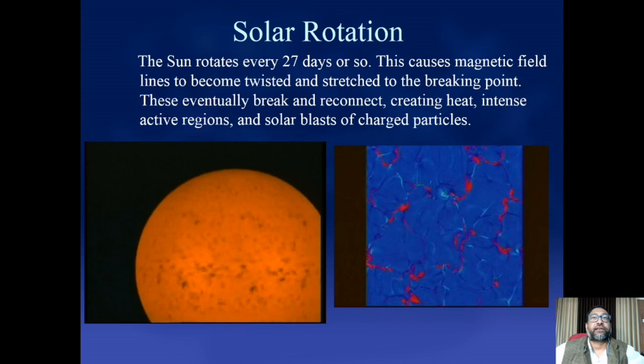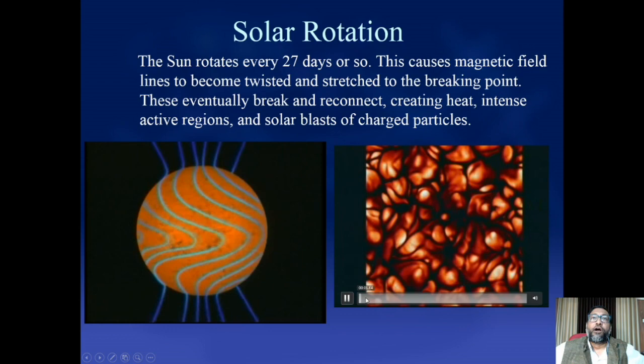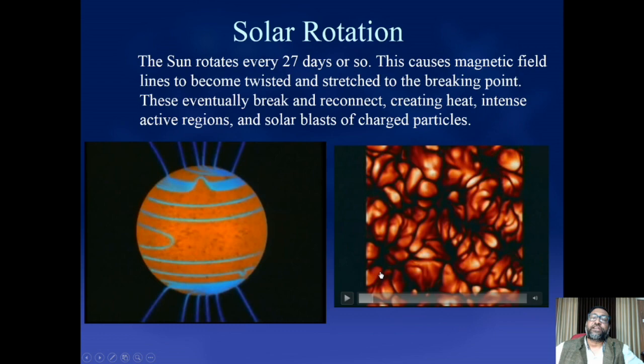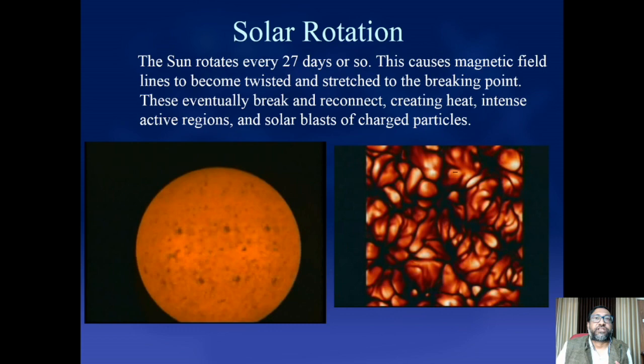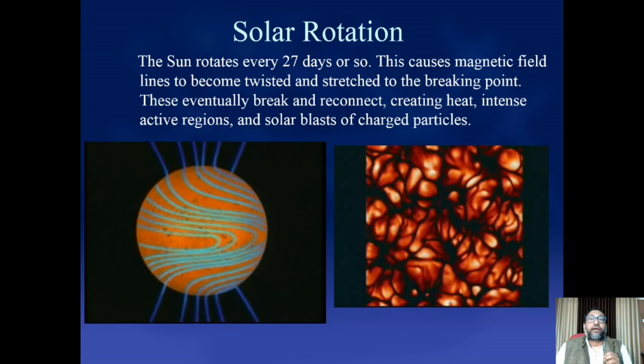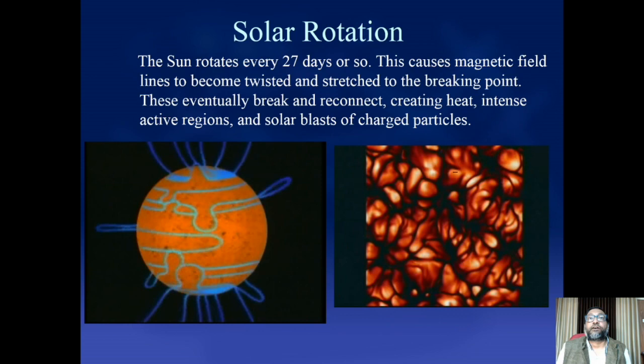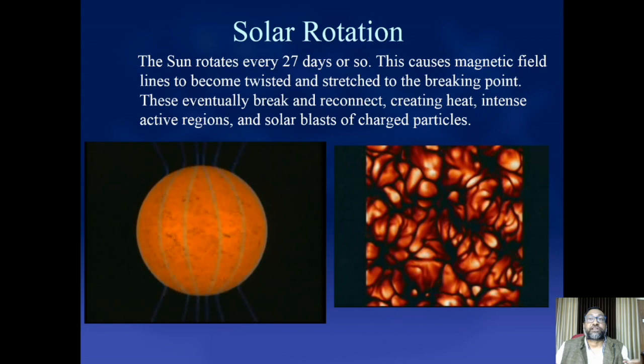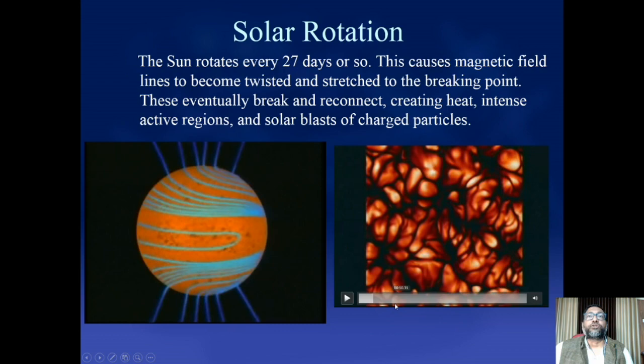On the sun there are two regions: regions where you see lots of sunspots — termed active regions — and regions that historically were always seen to be quiet. Because of our lack of observational facilities, we were not able to find the details of those quiet regions. But now I will show that the quiet region is quite dynamic as well.